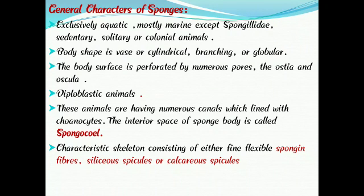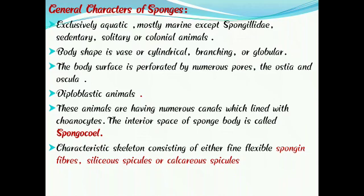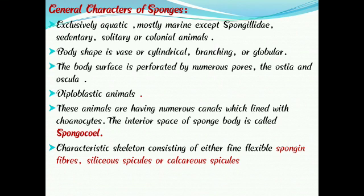Now let us come to the general characters of sponges or Porifera. These Porifera are present in aquatic environments and are mostly marine, except the family Spongylidae, which are freshwater forms. Porifera are sedentary, solitary, or colonial forms. Sedentary means they are attached to rocks or shells. Solitary means they are present as a single individual organism, and colonial means the Porifera form a group.